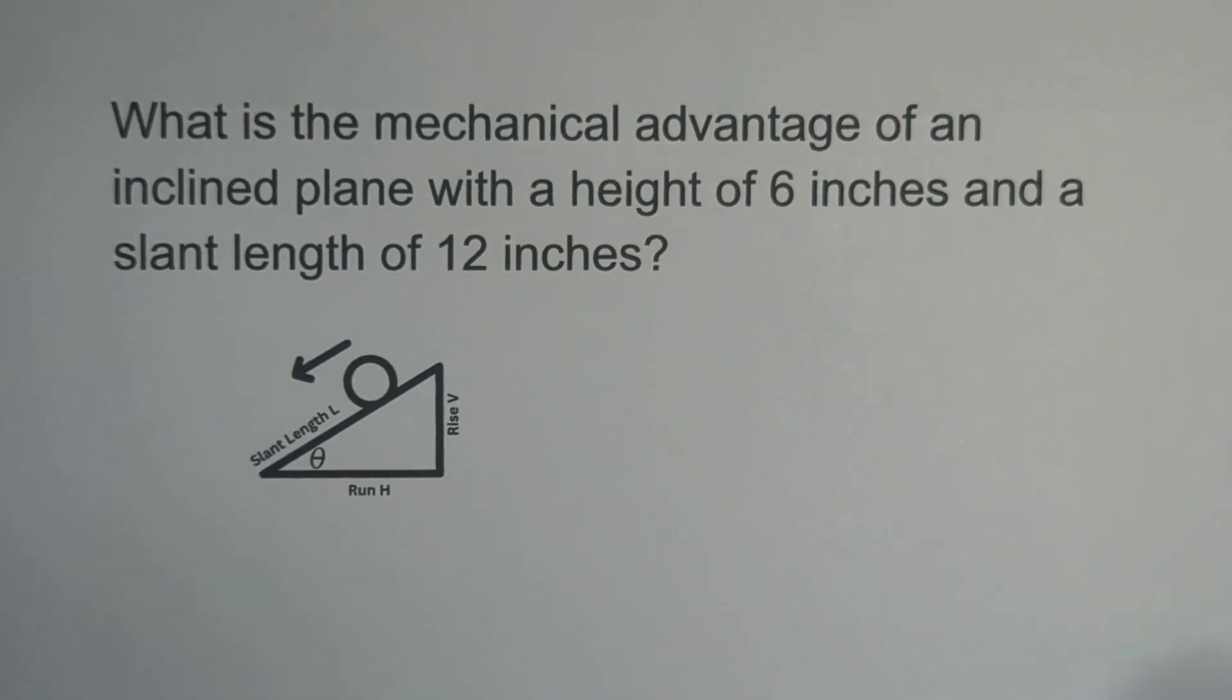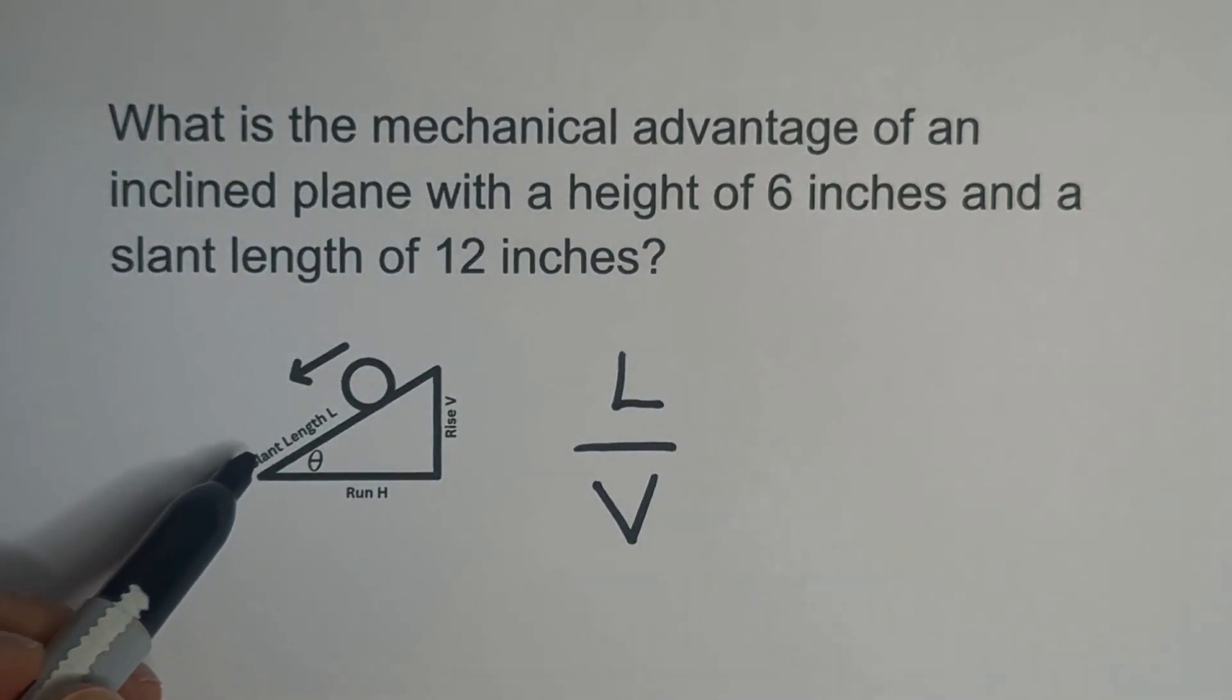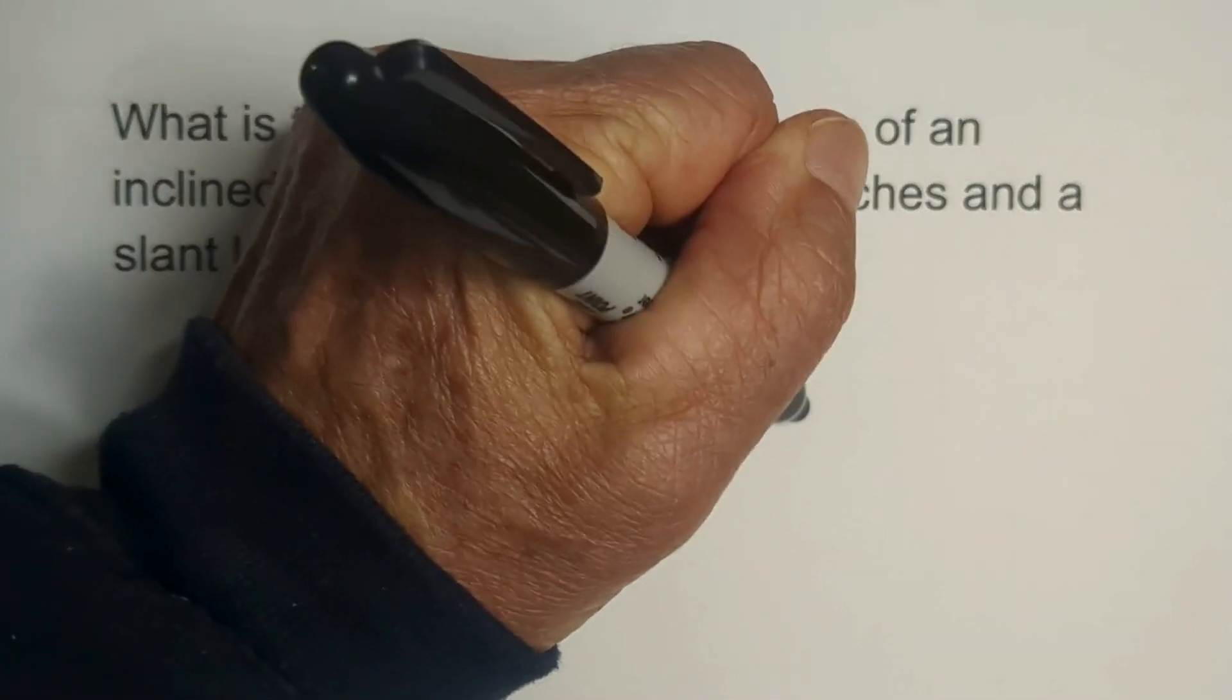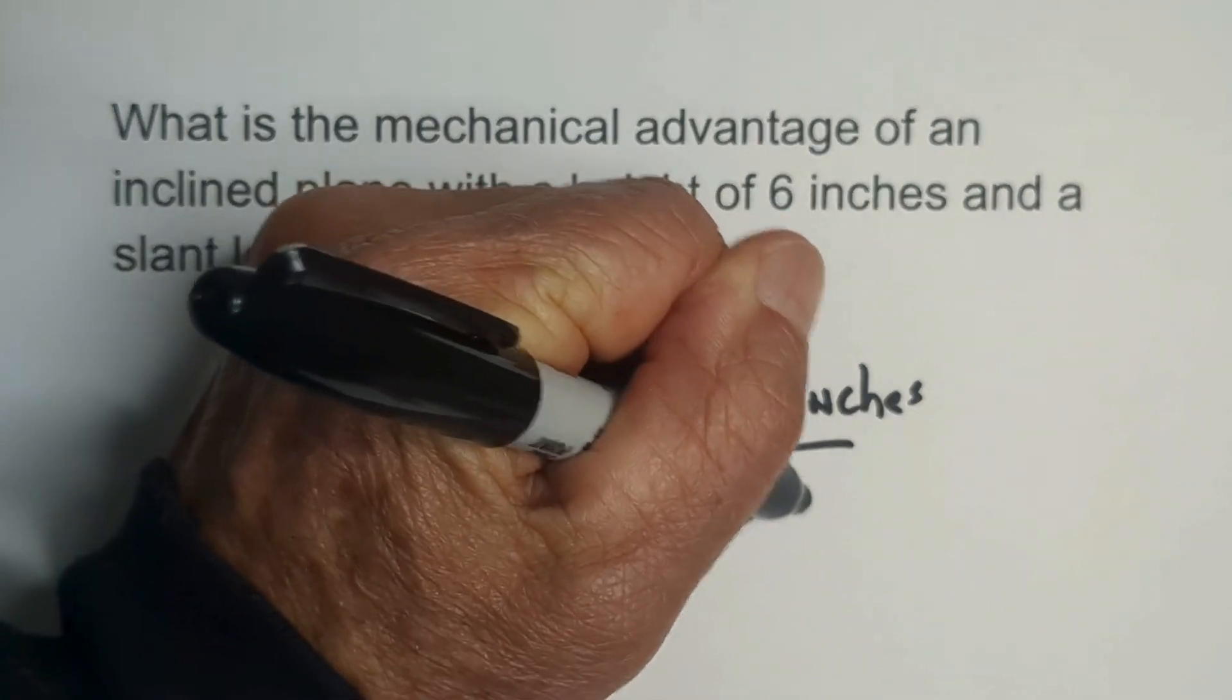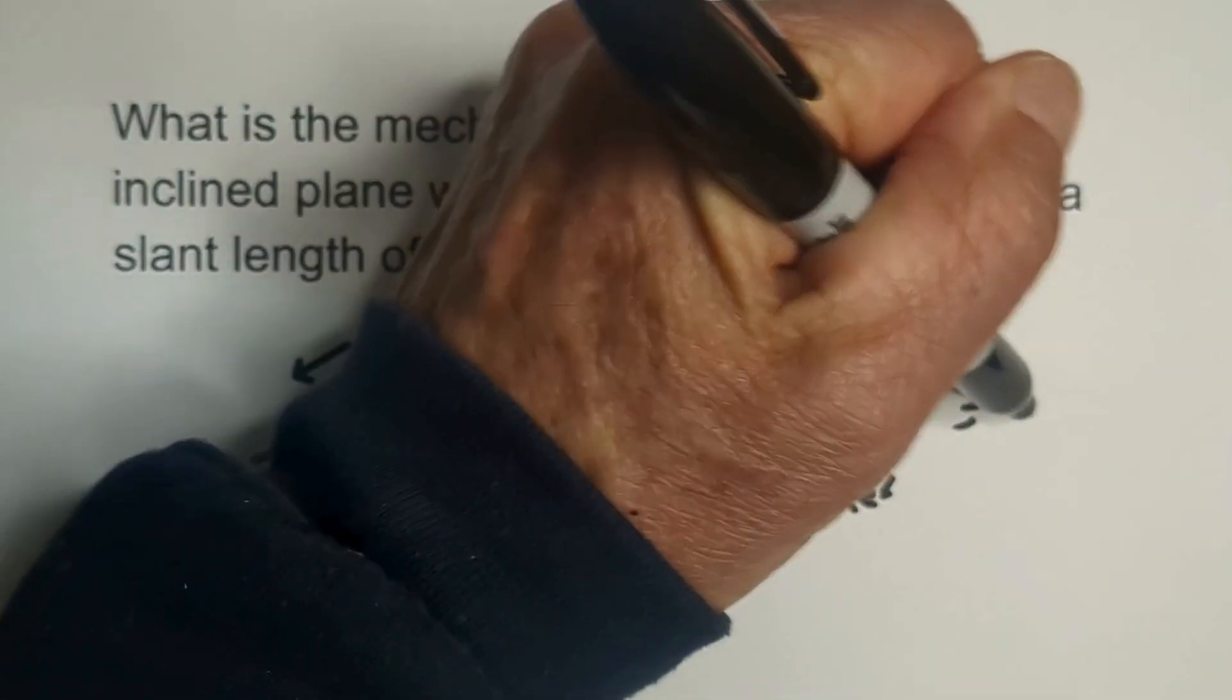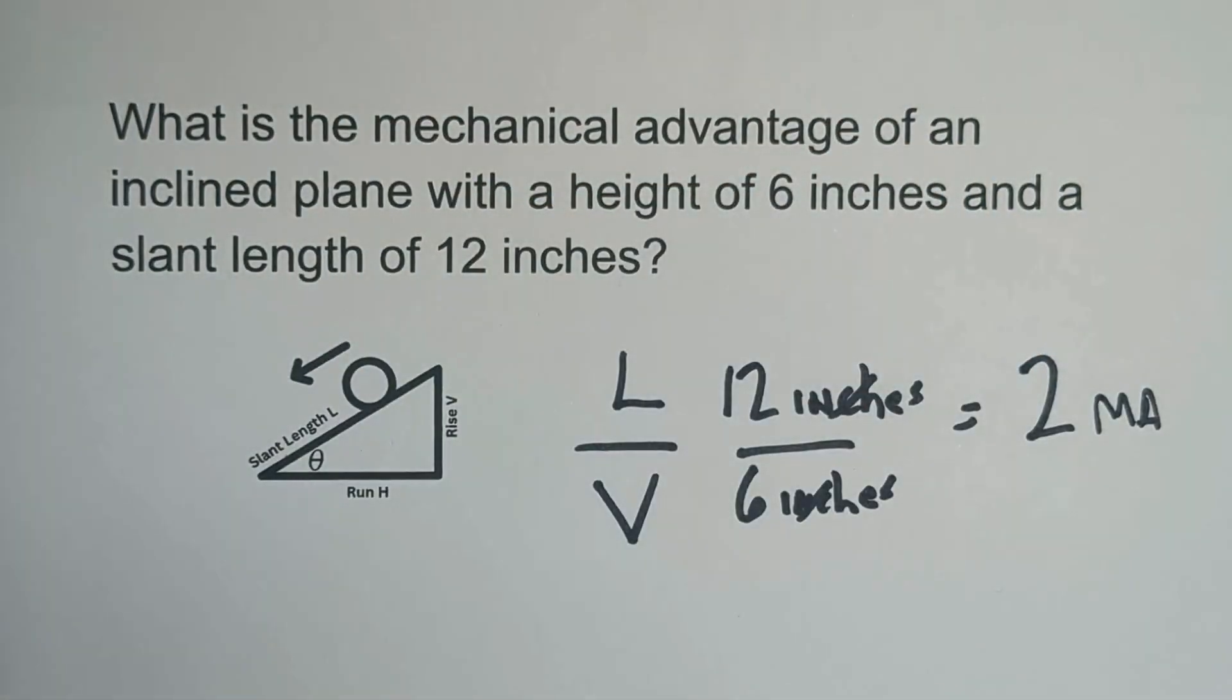Remember that the formula is L over V. So the slant length is 12 inches, and the rise is six inches. When you divide 12 by six, you get two. Remember these cancel, and so the mechanical advantage is two.